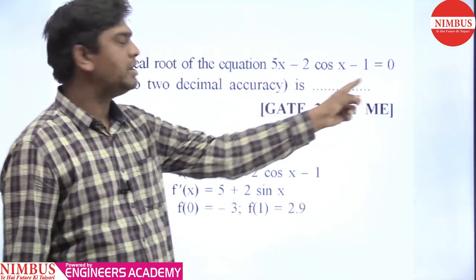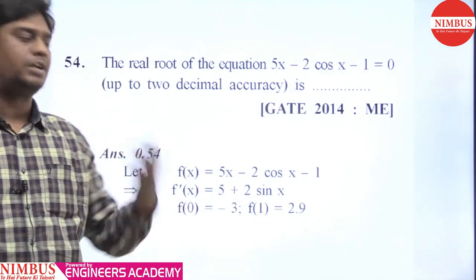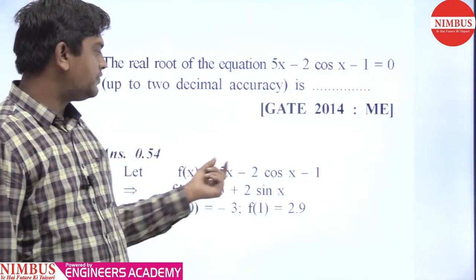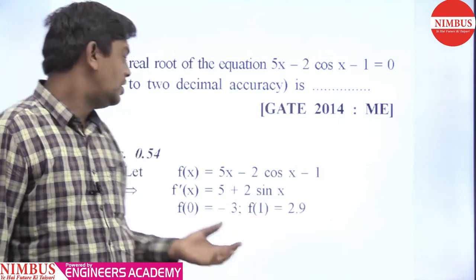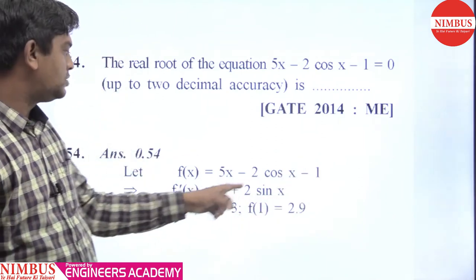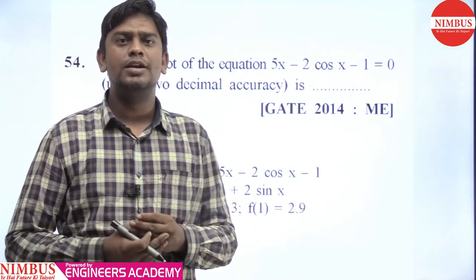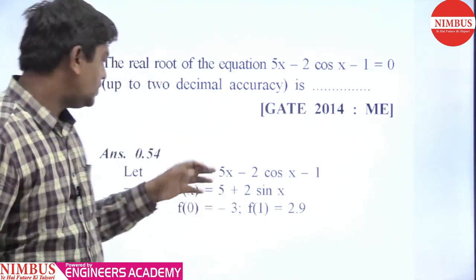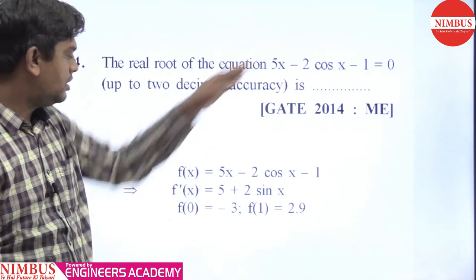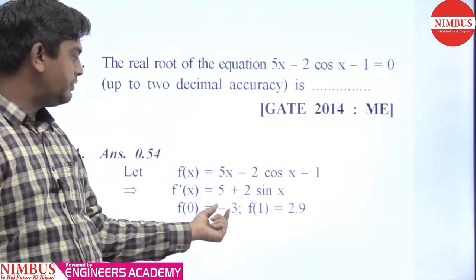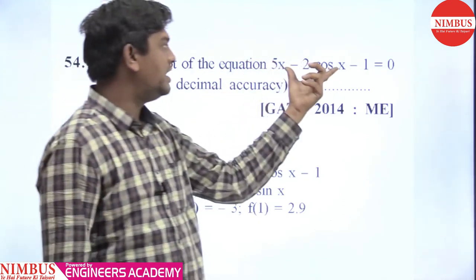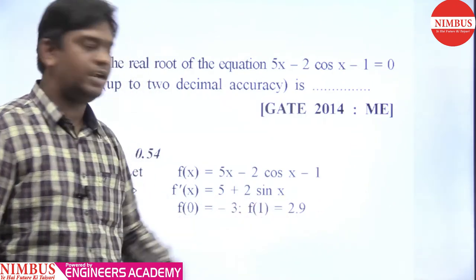This equation is equal to 5x minus 2cos(x) minus 1. So let f(x) = 5x - 2cos(x) - 1, then f'(x) = 5 + 2sin(x). We randomly put values. When we put x = 0, the function equals minus 3. And when x = 1, the function equals 2.9.